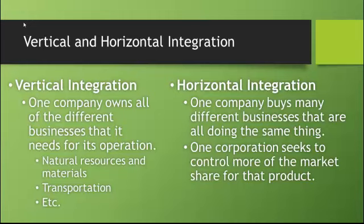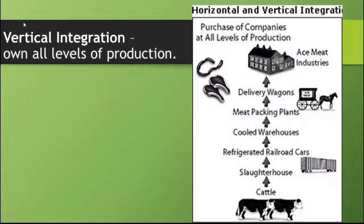There are two types of consolidation, called integration, where you take multiple businesses and put them together. The first kind is vertical integration, where one company owns all of the businesses it needs for its operation — from the natural resources and materials, to the transportation, through manufacturing and sales. If you own a meat company, you would own the cattle, the slaughterhouse, the railroad cars, the warehouses, the plants, and the wagons — every single thing you need to run your business, so you'd never have to deal with any other companies to create and sell your product.